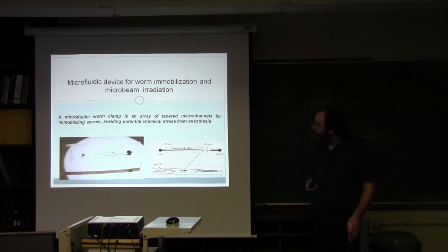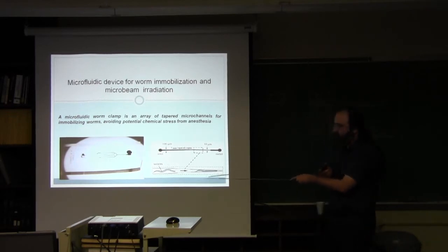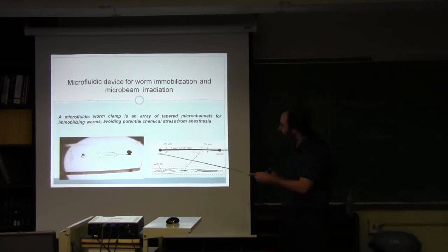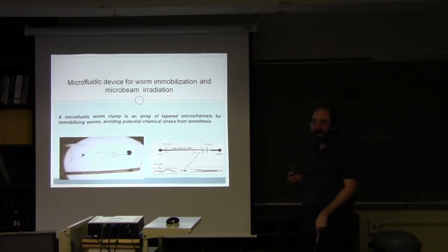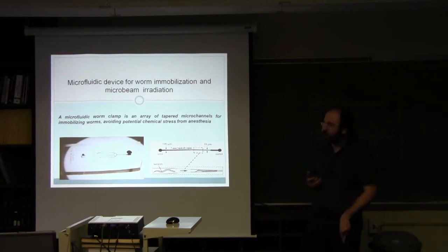In order to do that, the Whitesides group at Harvard have developed these worm clamps, which are tapered microfluidics channels, which the worm can swim into. But then when he reaches this region, he gets stuck. If you apply a very small pressure differential between the inlet and the outlet, it cannot swim back and it will stay wherever you want it to stay. You can easily target it wherever you want for the irradiation.